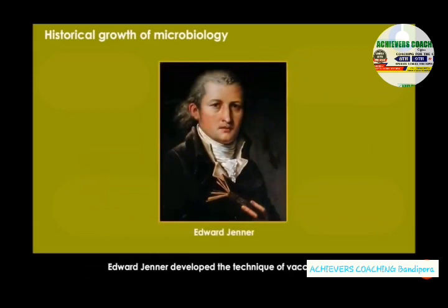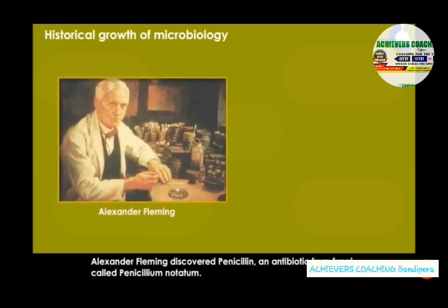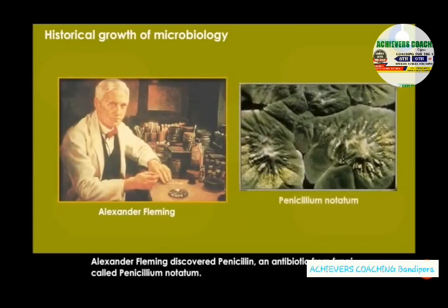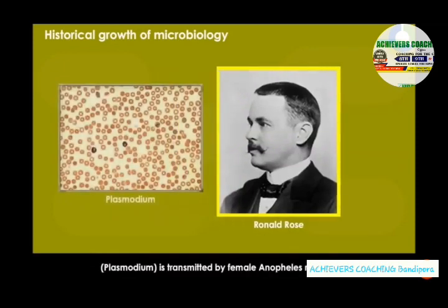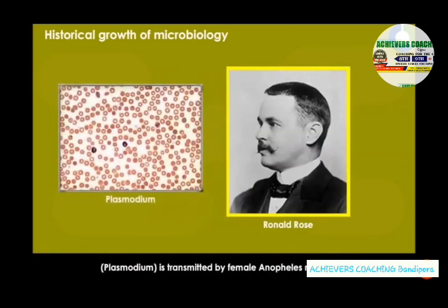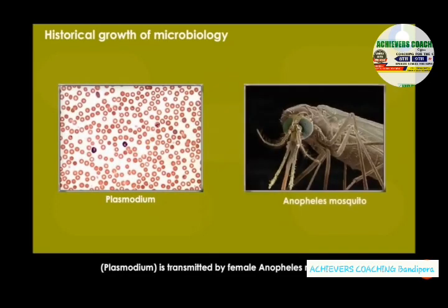Edward Jenner developed the technique of vaccination. Alexander Fleming discovered penicillin, an antibiotic from fungi called Penicillium notatum. In 1902, Sir Ronald Ross reported that the malarial parasite, Plasmodium, is transmitted by female Anopheles mosquitoes.